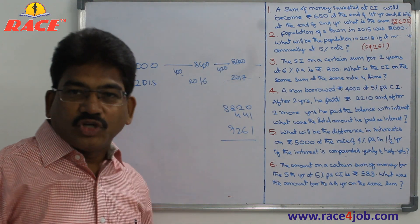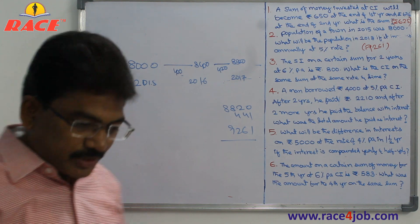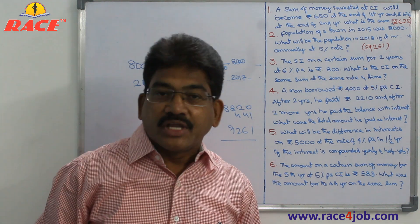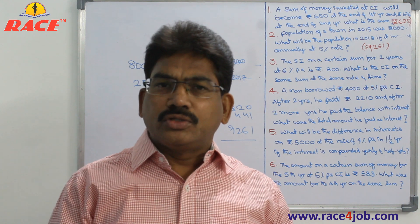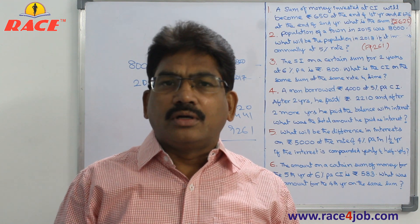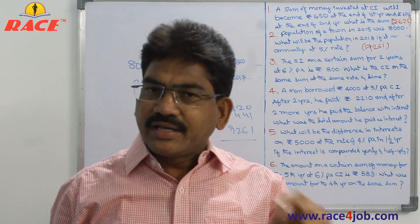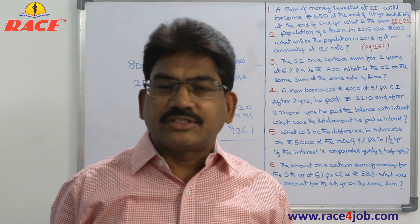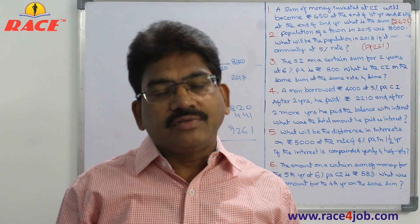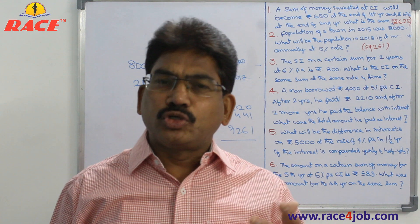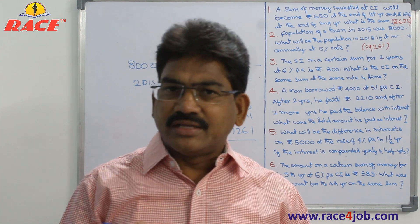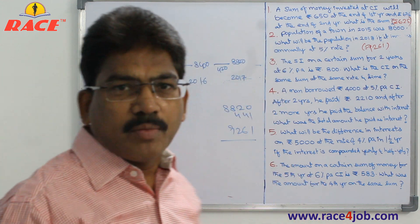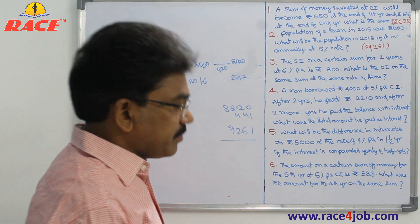So this is how to calculate. Not only population questions — even the height of a tree. For example, height of a tree in 2016 is 2 meters and it increases 5% every year. What will be the height in 2018 after 2 years? Just similar to this. Whether it is height, whether it is population, whether it is compound interest — the same concept.